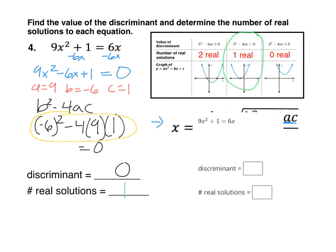So in discriminant, I'm going to type in the number 0. And in the number of real solutions, we're going to type in a 1.